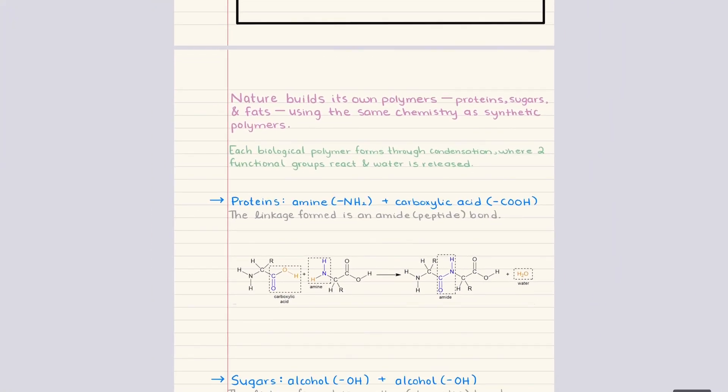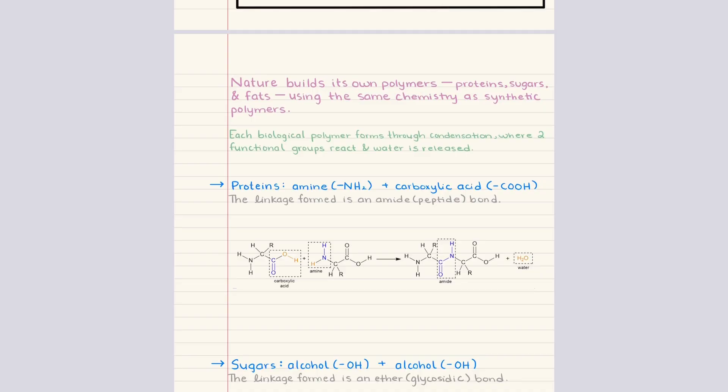Now that we have seen how synthetic polymers form, we can transition into how nature uses these exact same chemical ideas to build the large biological molecules that we rely on every day. The key idea is that biological polymers form through condensation reactions, meaning two functional groups react and they release a molecule of water as the bond forms. Now even though the structures look more complex than the plastics we just discussed, the underlying chemistry is identical.